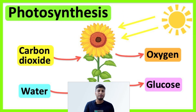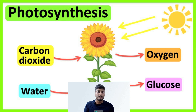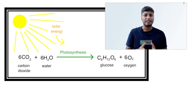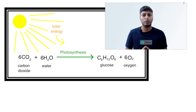Photosynthesis is a very important process which occurs in green plants. By photosynthesis, green plants utilize carbon dioxide and water, and in the presence of sunlight they form glucose. At the same time, oxygen is released as a by-product. The equation of photosynthesis is: 6CO₂ + 6H₂O in the presence of sunlight forms C₆H₁₂O₆ plus 6O₂.